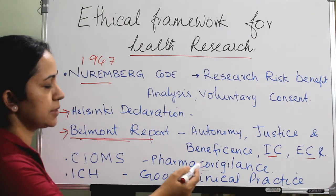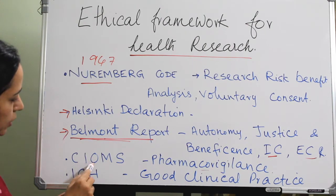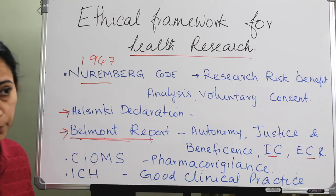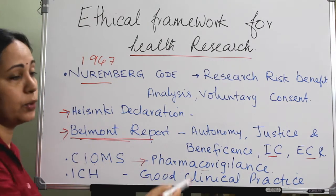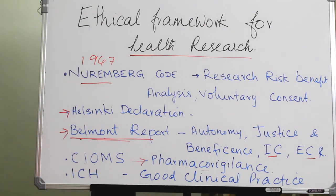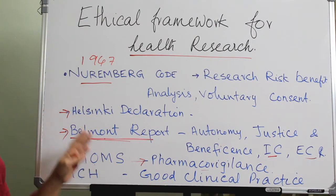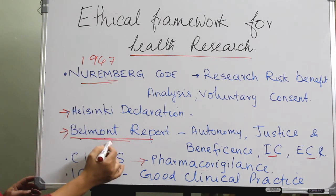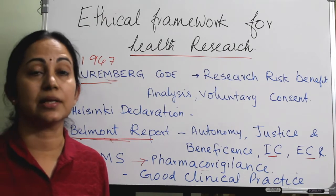An important step was taken by CIOMS — the Council for International Organizations on Medical Sciences — and WHO, which mainly documented pharmacovigilance, that is adverse drug reactions and clinical trials on drugs. The International Council on Harmonization, ICH, mainly documented good clinical practice. You especially have to remember the Nuremberg Code and the Belmont Report on Autonomy, Justice, Beneficence, Informed Consent, and Ethics Committee review.